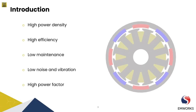External rotor PMSM in particular have some unique advantages over other motor types. These motors have a rotor that is located outside the stator, which not only improves the motor heat dissipation, but can also increase the torque density. The external rotor design also allows for a larger air gap between the rotor and stator, which can reduce the likelihood of cogging torque and torque ripple.